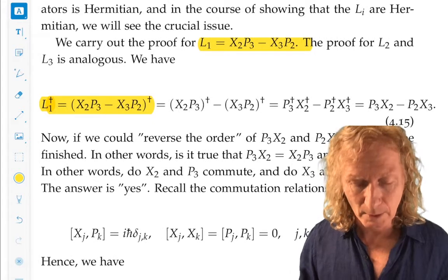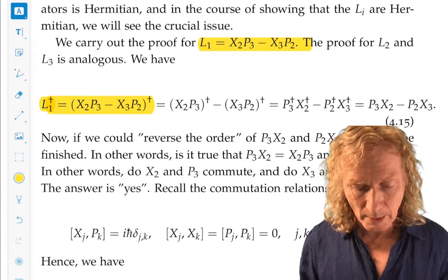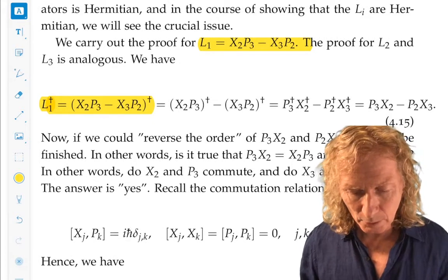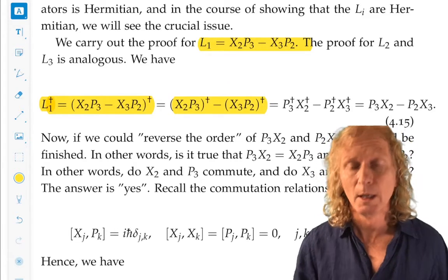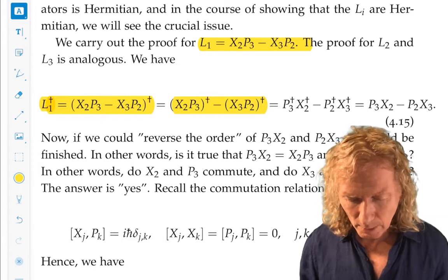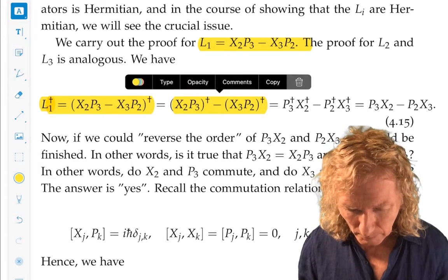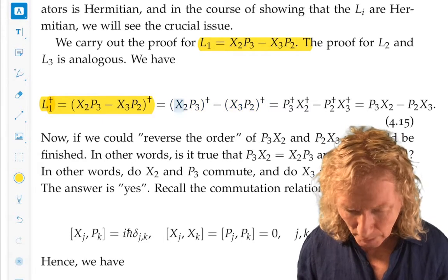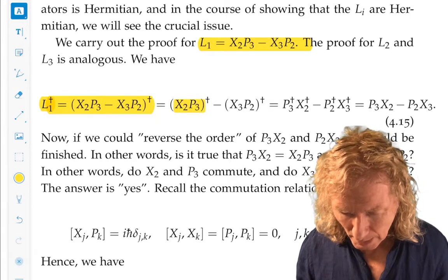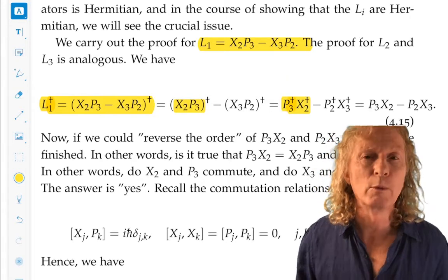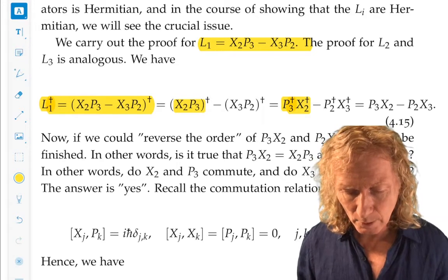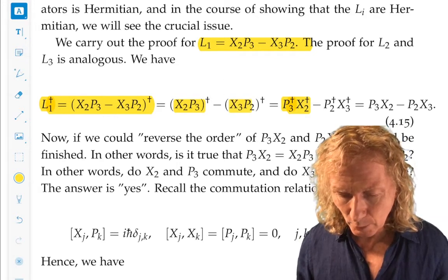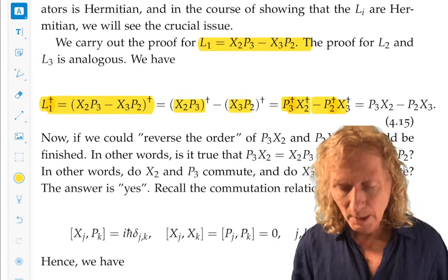So L1 adjoint is nothing more than (X2P3 - X3P2) adjoint. The adjoint of the sum is the sum of the adjoints, so that's X2P3 adjoint minus X3P2 adjoint. Here we go, look at the first one. X2P3 adjoint is P3 adjoint X2 adjoint. We reverse when we take the adjoints. And the second one will be P2 adjoint X3 adjoint.